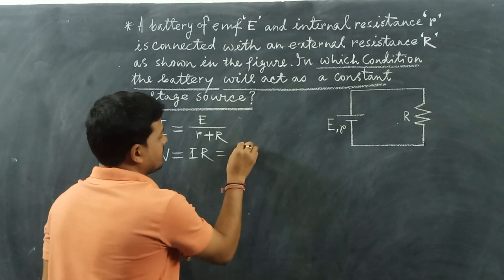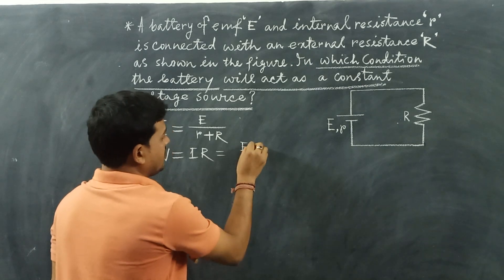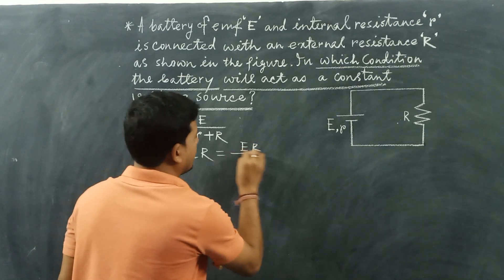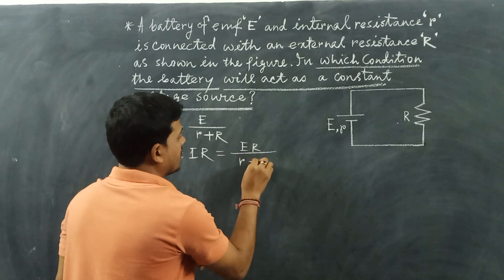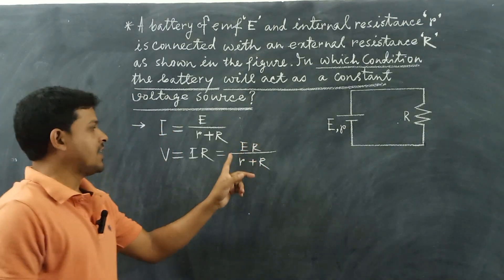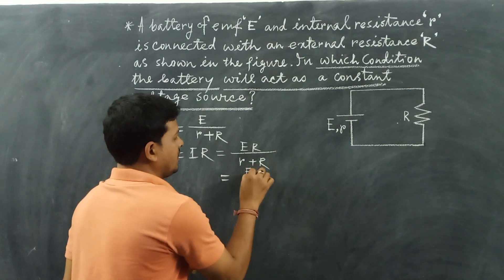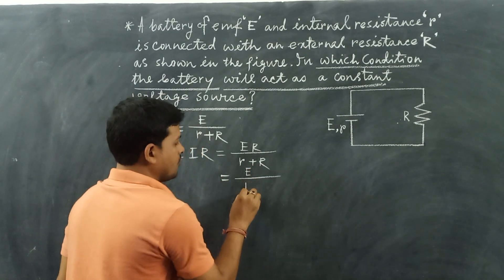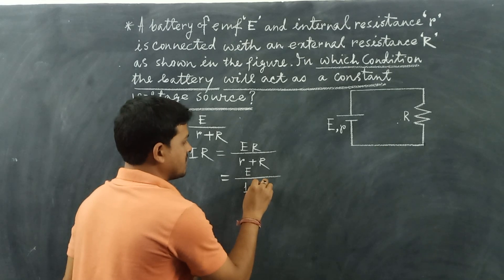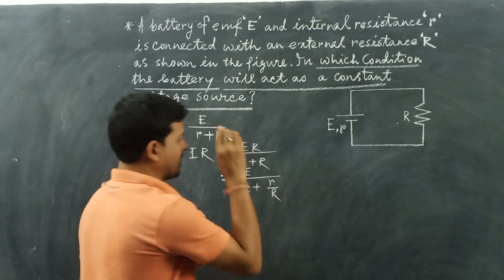So we can write V equals I R, and the value of I is E times R divided by r plus R. This equals E divided by 1 plus r divided by R.